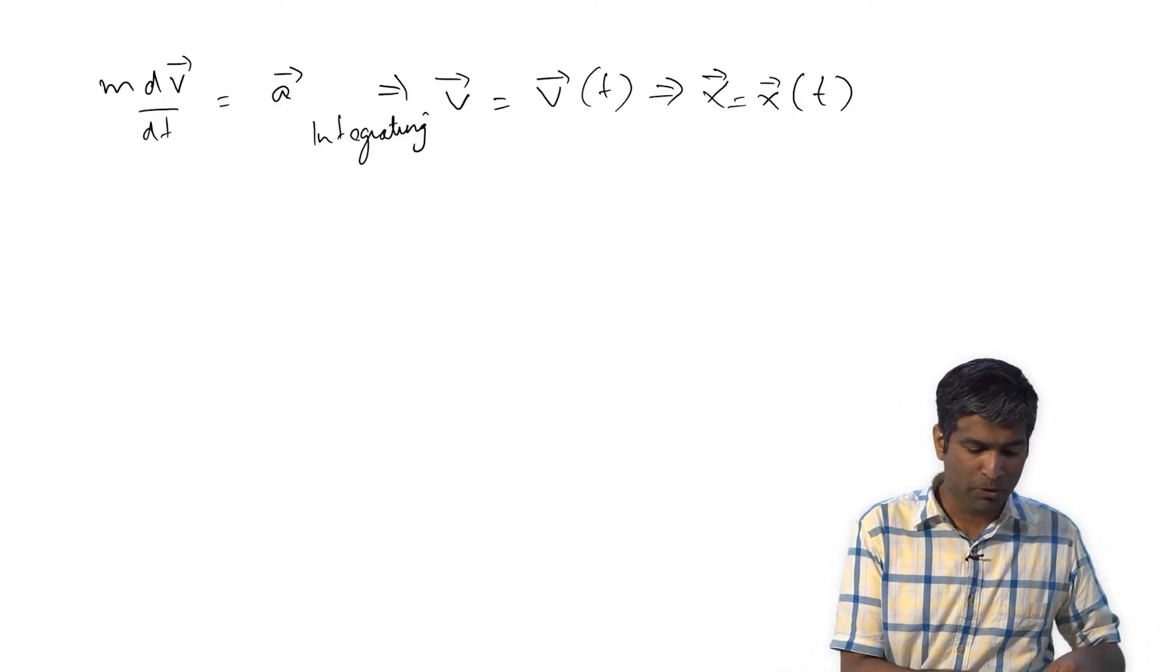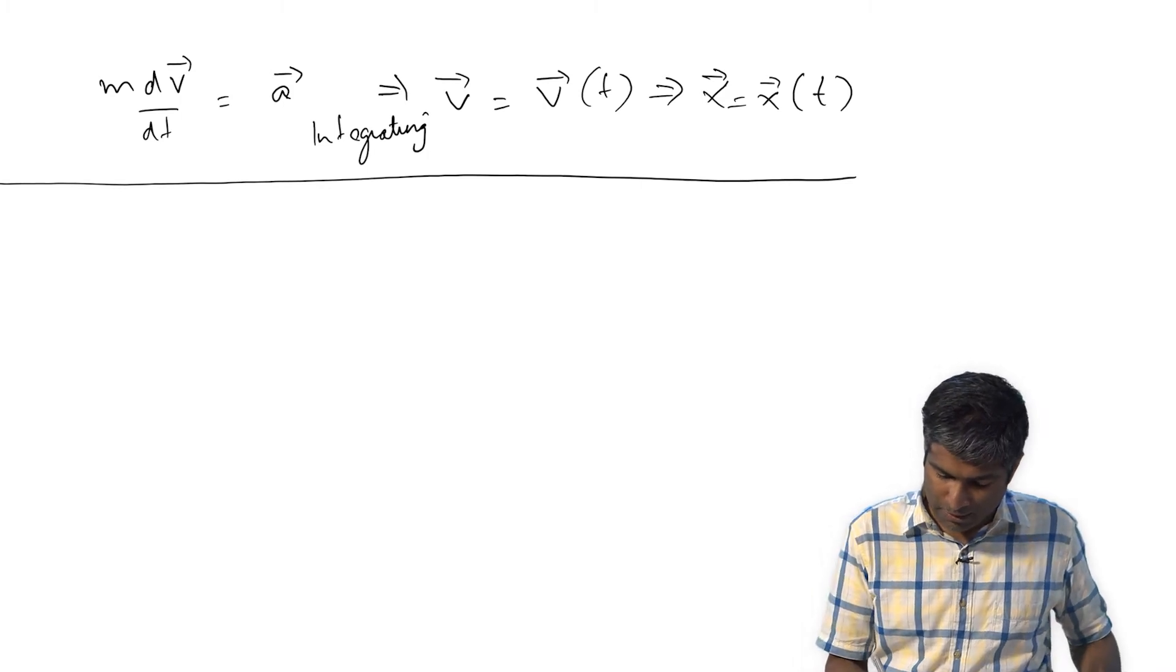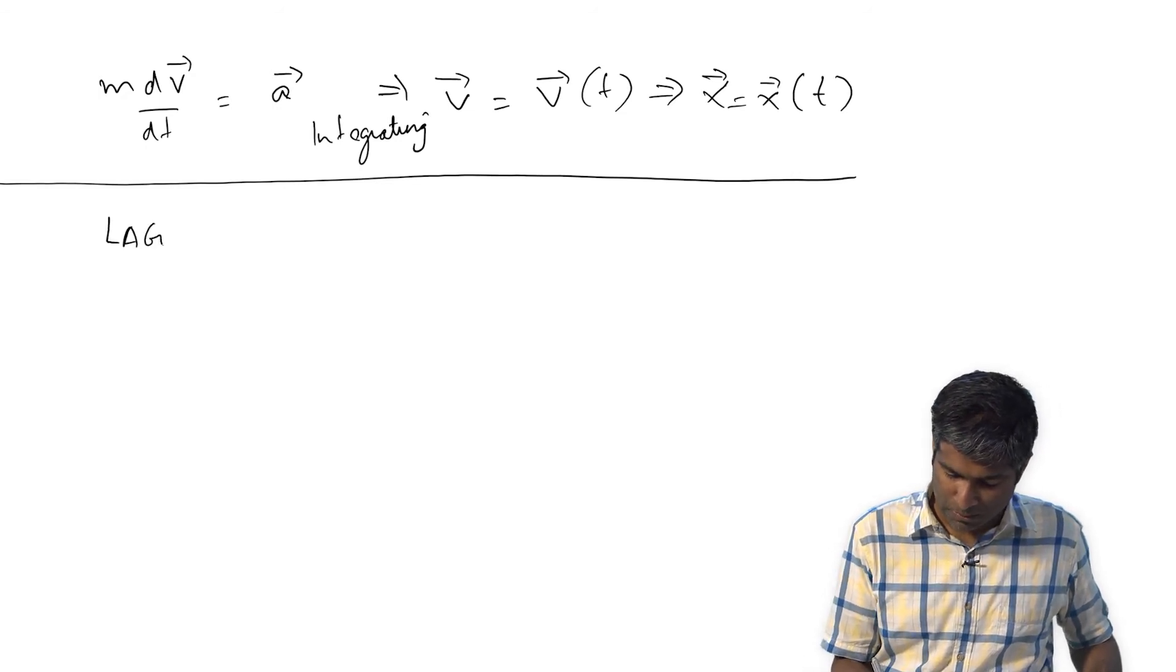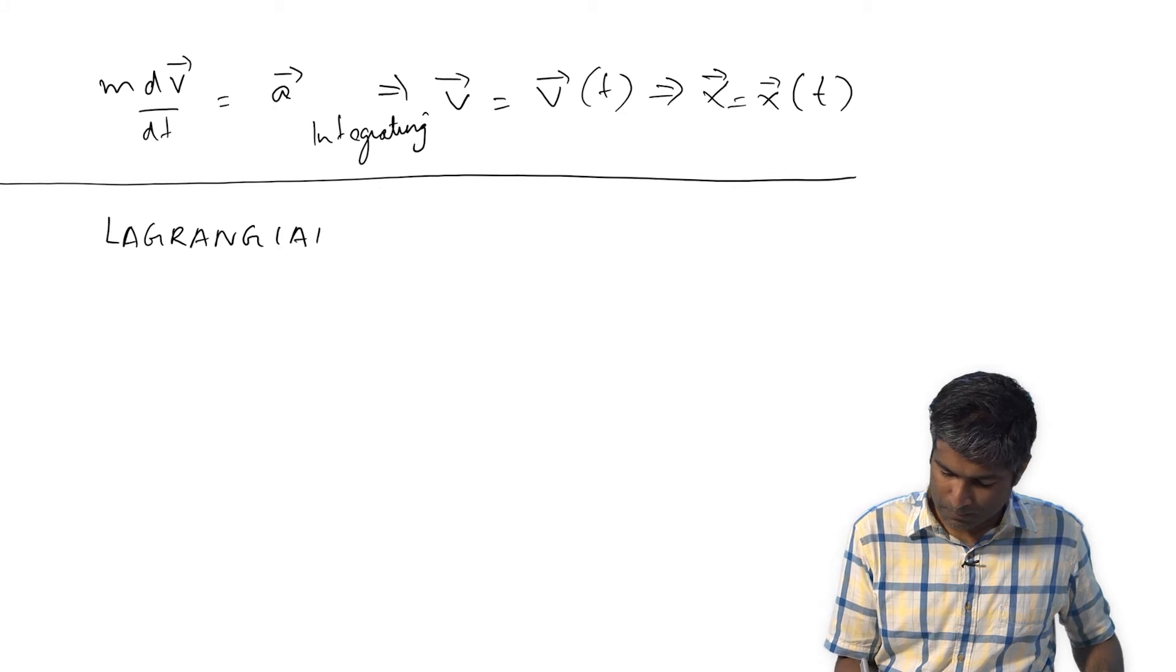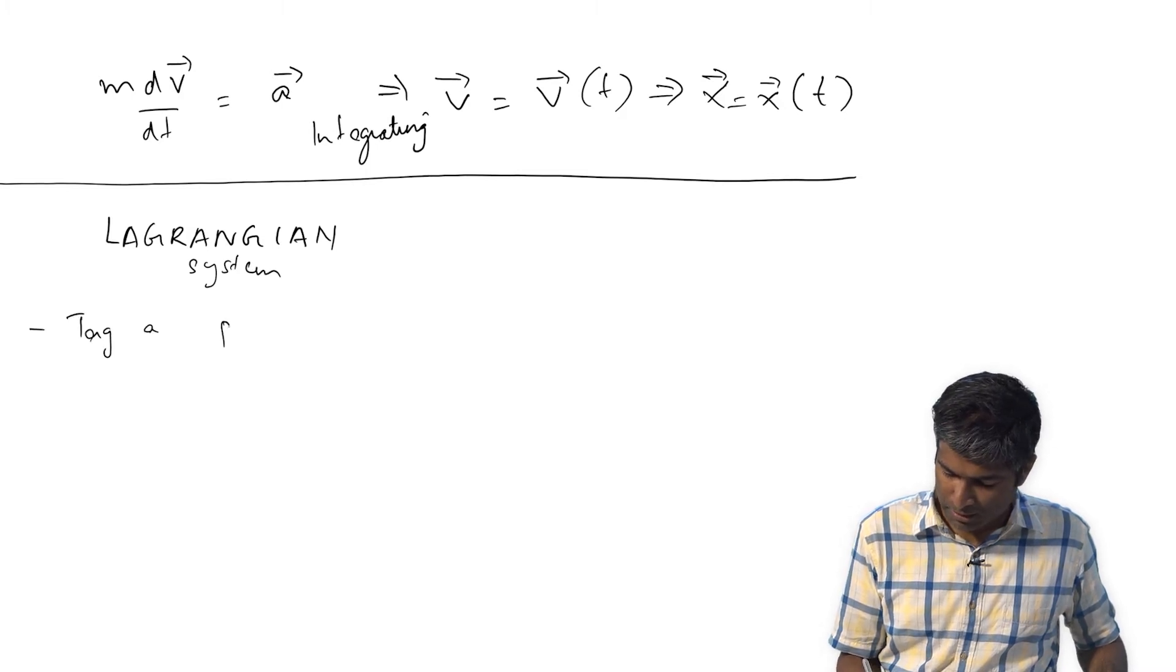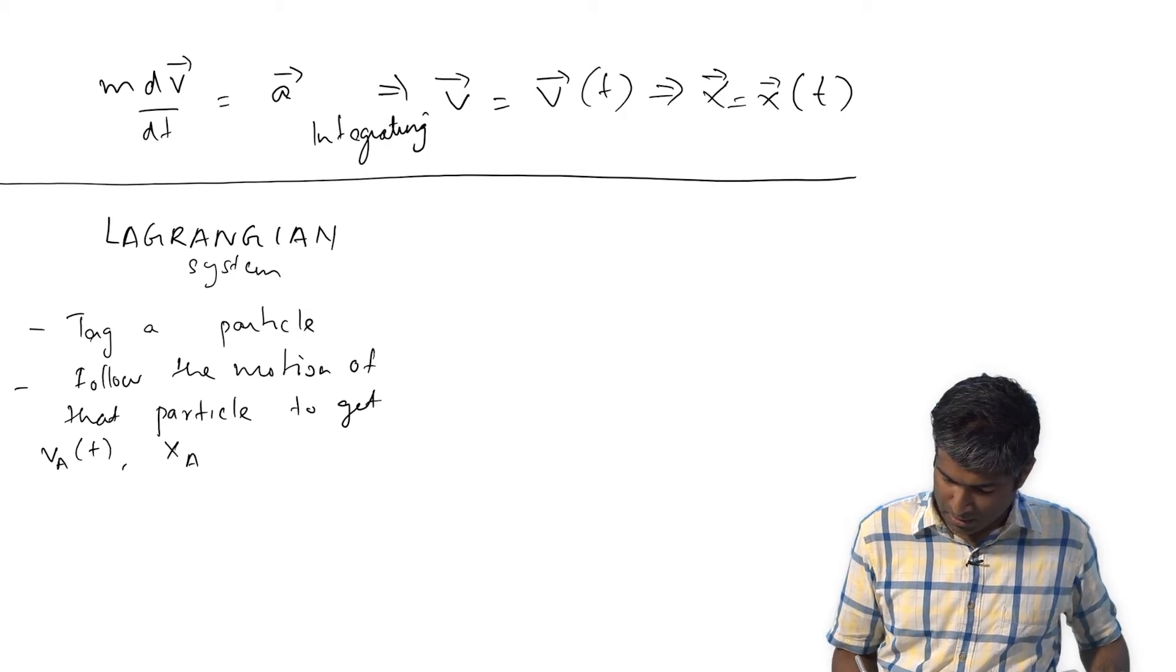That brings us to the concept of an Eulerian versus a Lagrangian framework. Let me start with the Lagrangian because that's what we are more familiar with. The Lagrangian system says tag a particle, follow the motion of that particle to get the velocity Va as a function of time, and x_a, y_a, z_a as a function of time.